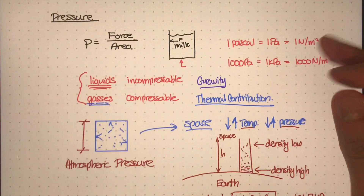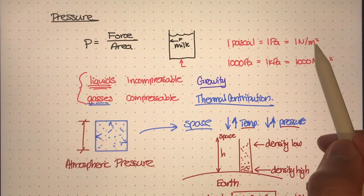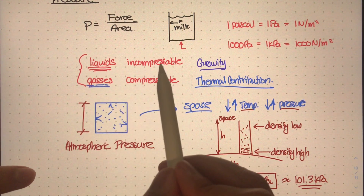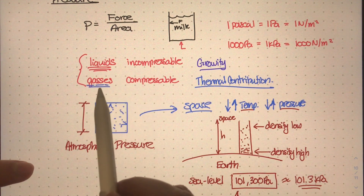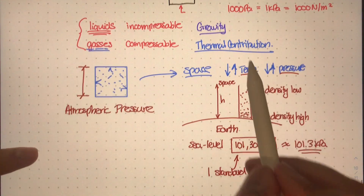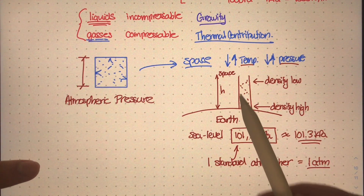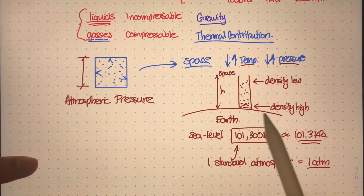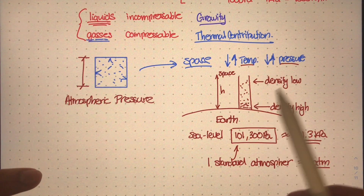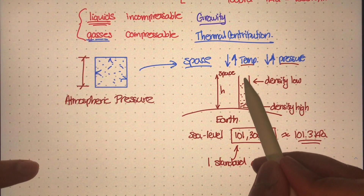To wrap all of this up: pressure is really the force over some given area that the force is being applied to, and we usually measure pressure in pascals, or newtons per meter squared. There are two types of fluids — liquids and gases. Liquids are incompressible, and the pressure caused by liquids is more dependent on gravity. For gases, the pressure is more dependent on temperature. There is a special case: if the container is small, gases depend on thermal contribution; but if the container is very tall — like studying gases in the atmosphere — then gravity absolutely plays a role, since gas molecules are denser closer to Earth and less dense toward space.